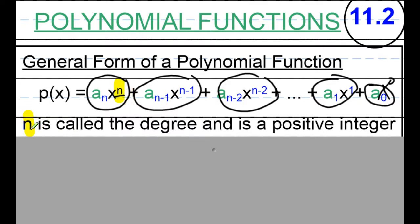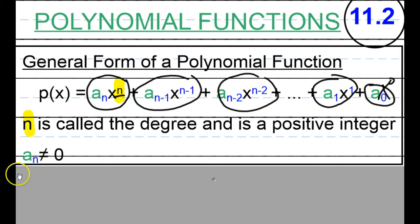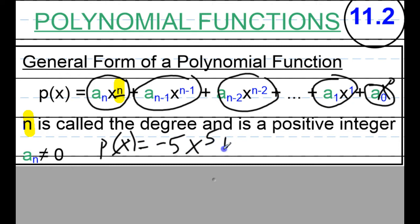We call n the degree. And for polynomials, the degree has to be a positive integer — a positive whole number. The other restraint is that the first constant, the leading coefficient, has to be a non-zero number. So let me give you an example: p(x) is equal to negative 5x to the fifth plus 3x to the fourth plus 2.